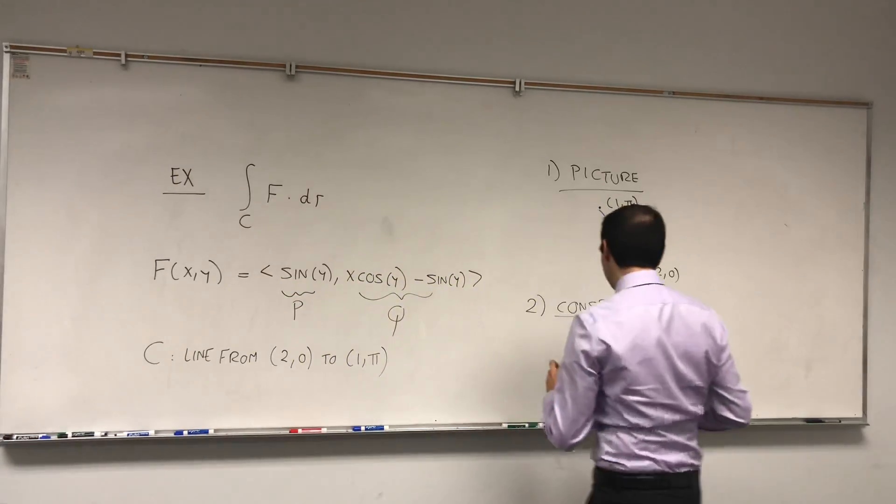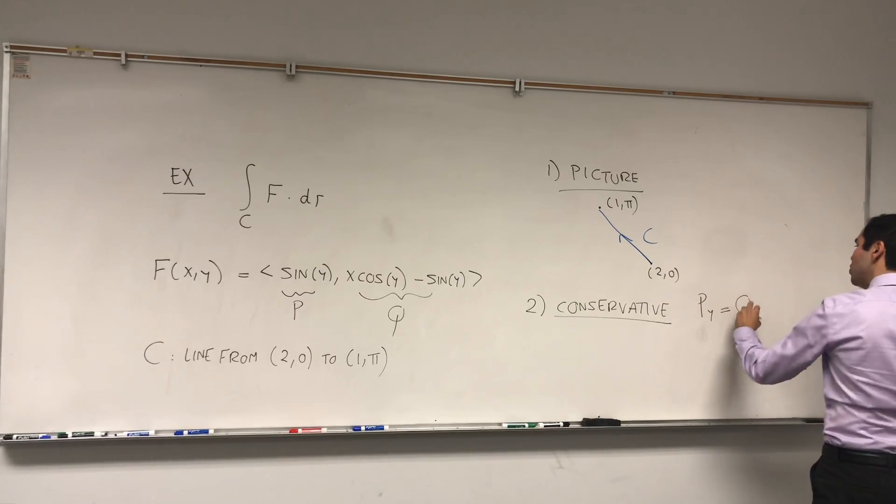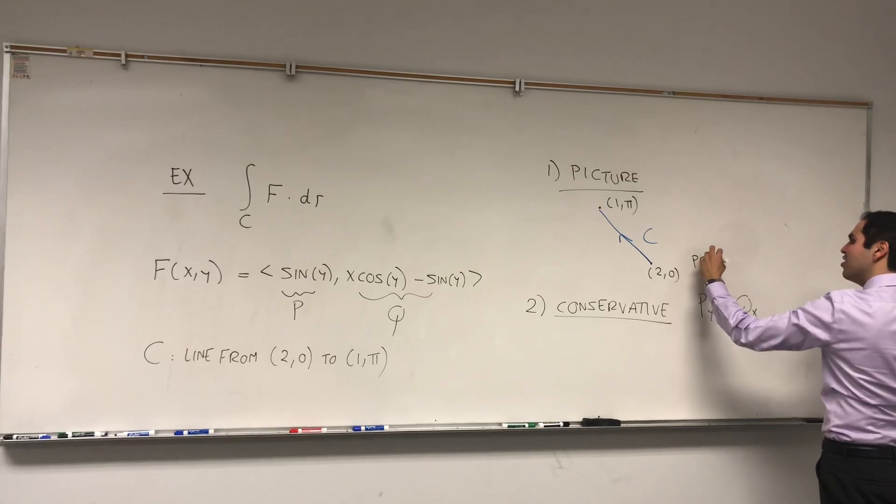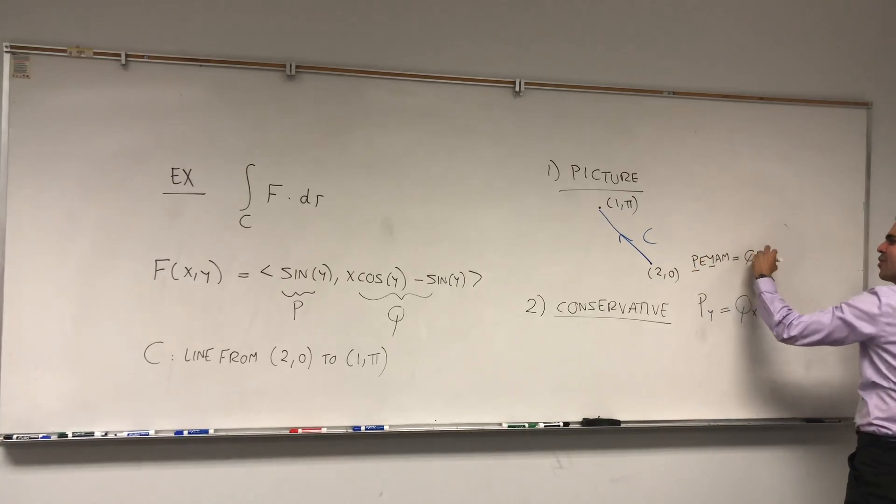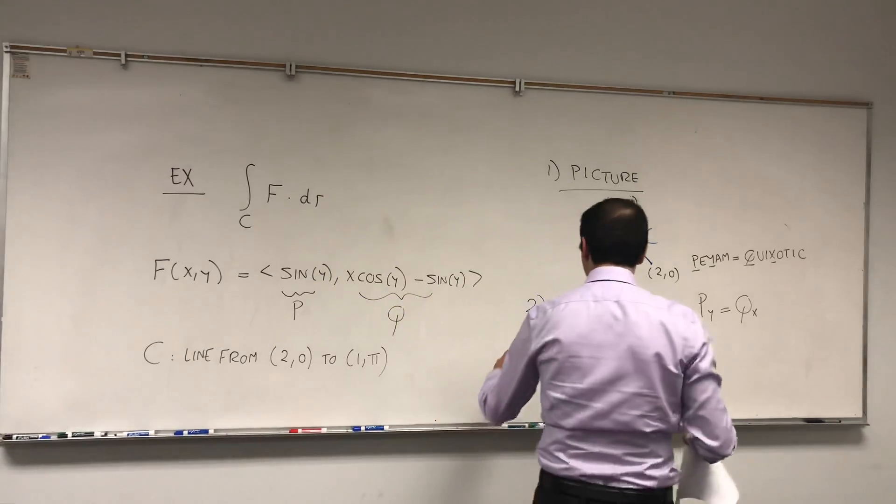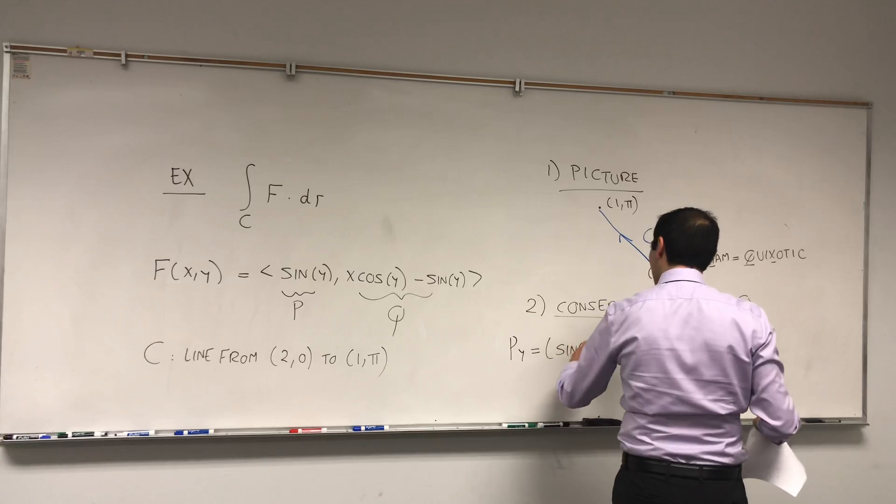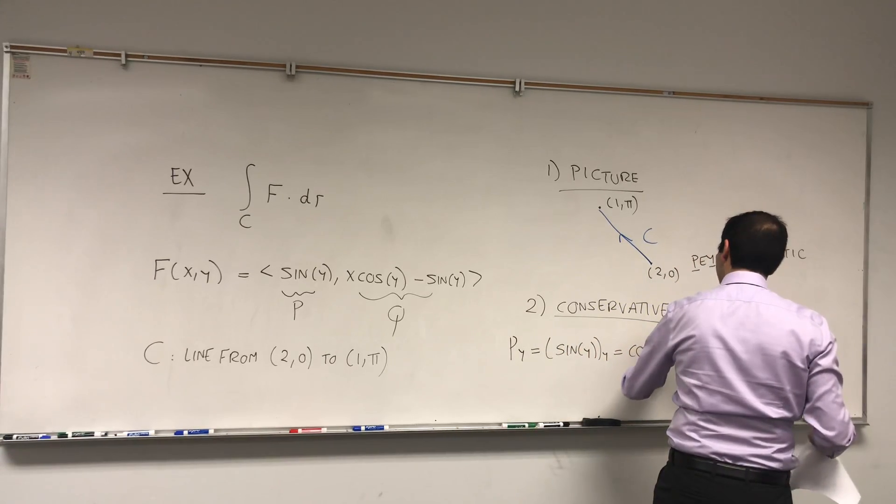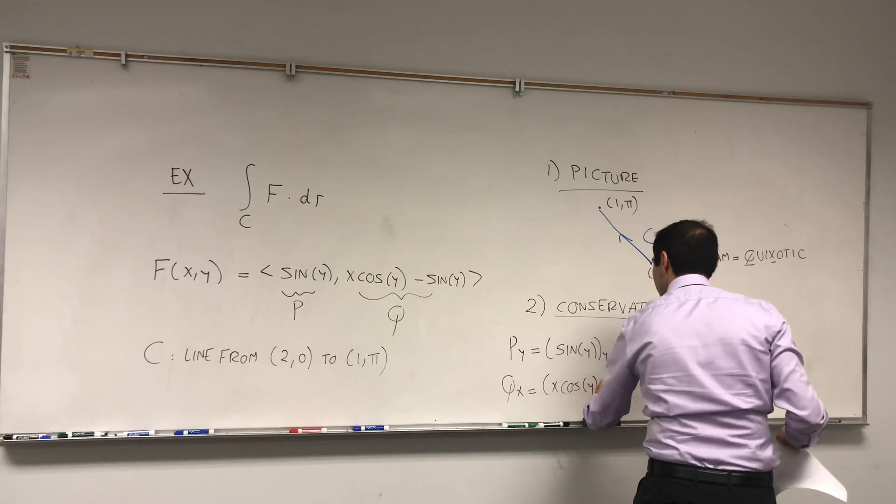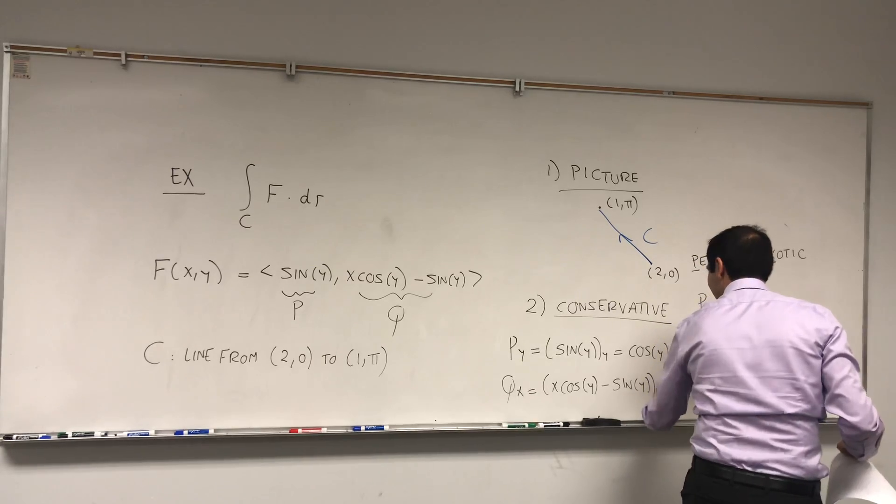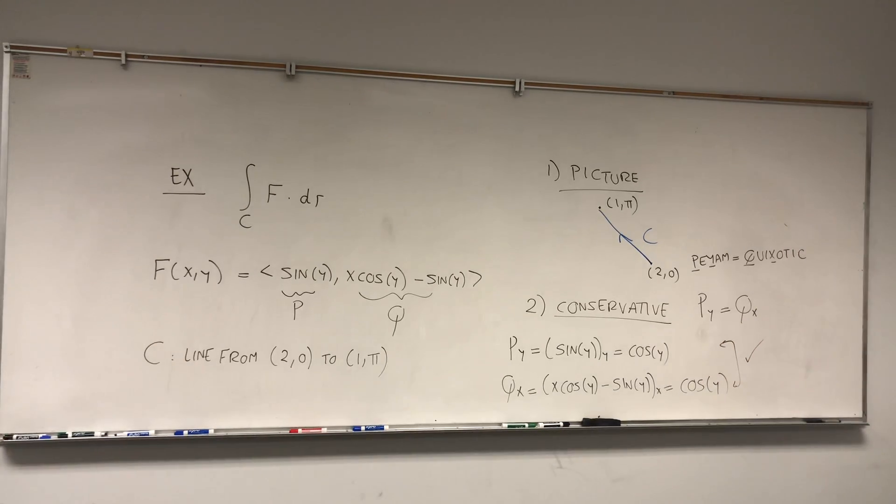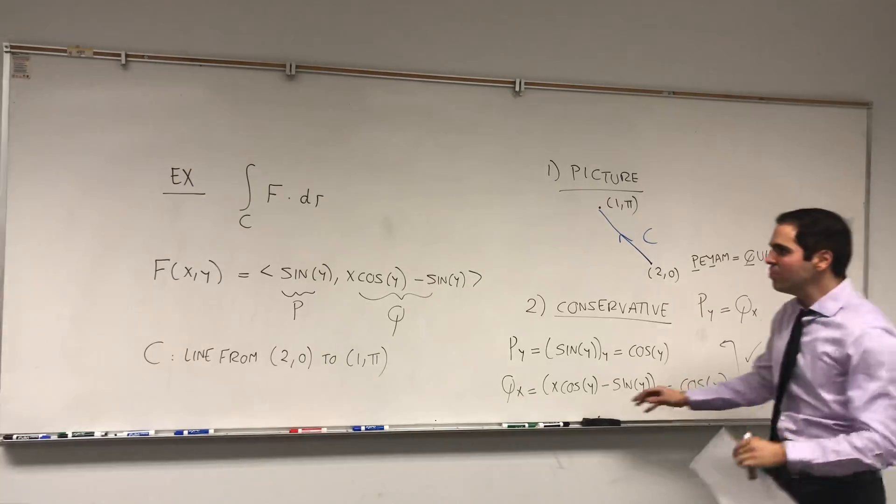you have to check whether Py equals Qx or not. I know it looks kind of weird, but just think of it as a mnemonic: Py equals Qx. Well let's check this. The derivative of this with respect to y, Py, which is sin(y) with respect to y, that's cos(y). And Qx is the derivative of this with respect to x: x·cos(y) - sin(y) with respect to x, that just becomes cos(y). So indeed you can see both of them are equal, which means we can proceed with the fundamental theorem of line integrals.